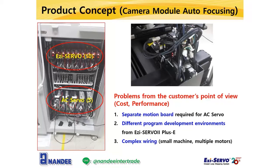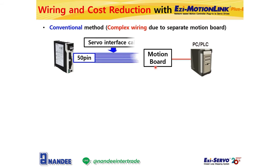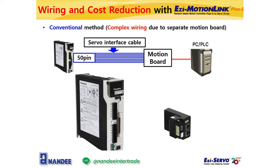As previously explained, conventionally a separate motion board was required to control the 5-axis of the AC servo, and wiring was complicated because many bundles of long wires had to be connected to the motion board through the servo interface cable of the AC servo drive. This inconvenience can be solved by using our product, EasyMotionLink Plus E. EasyMotionLink Plus E is an Ethernet type 1-axis motion controller that can be used by plugging it into the interface connector of the AC servo drive.